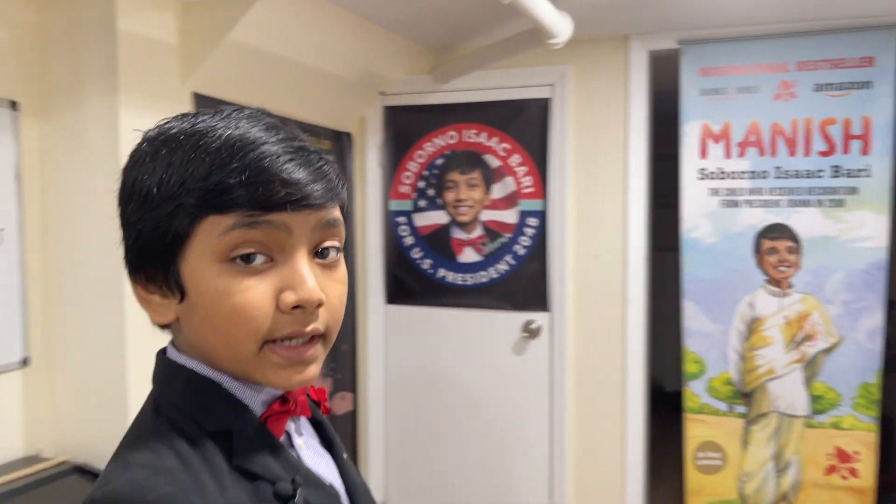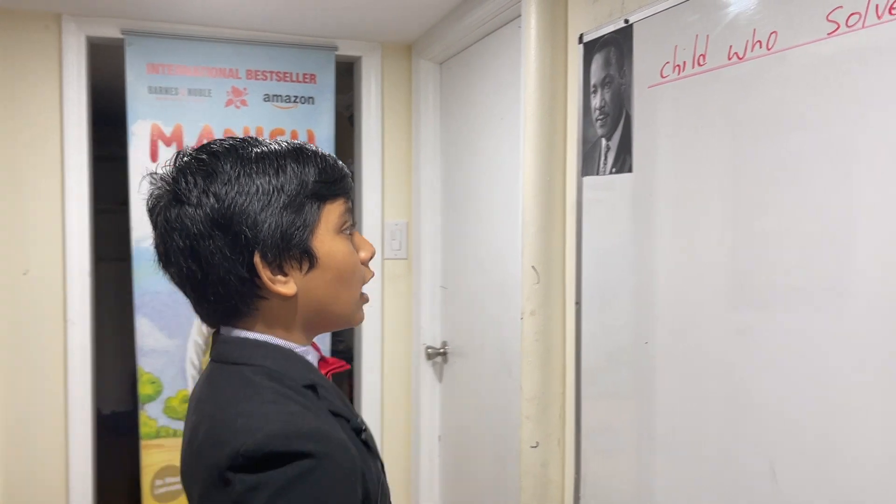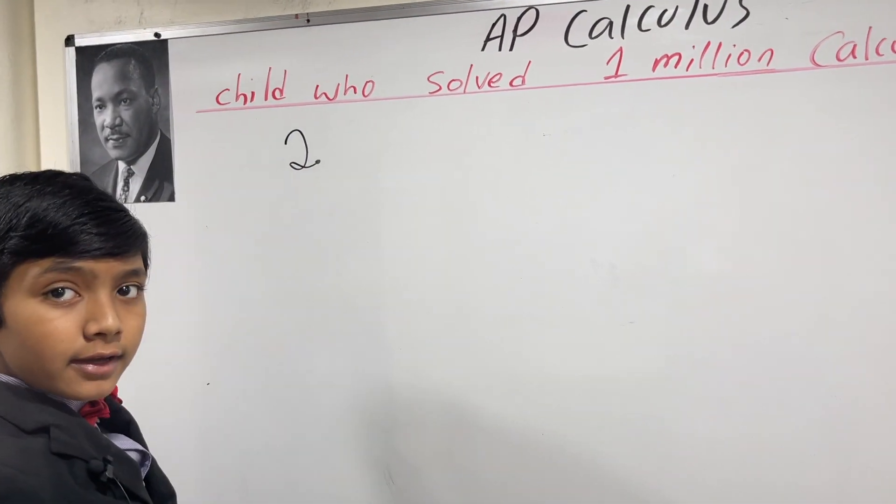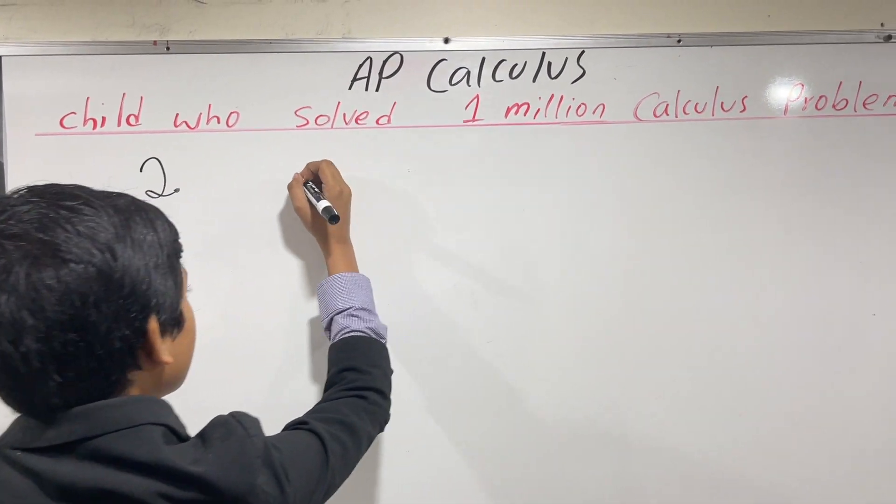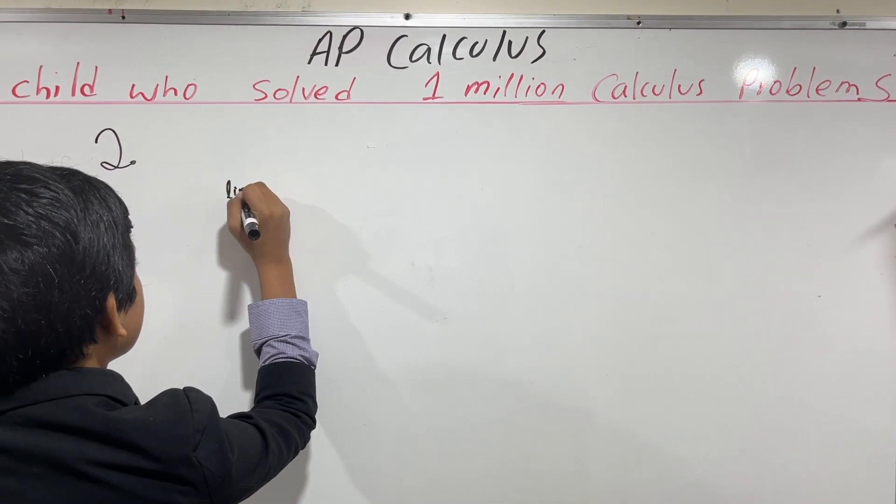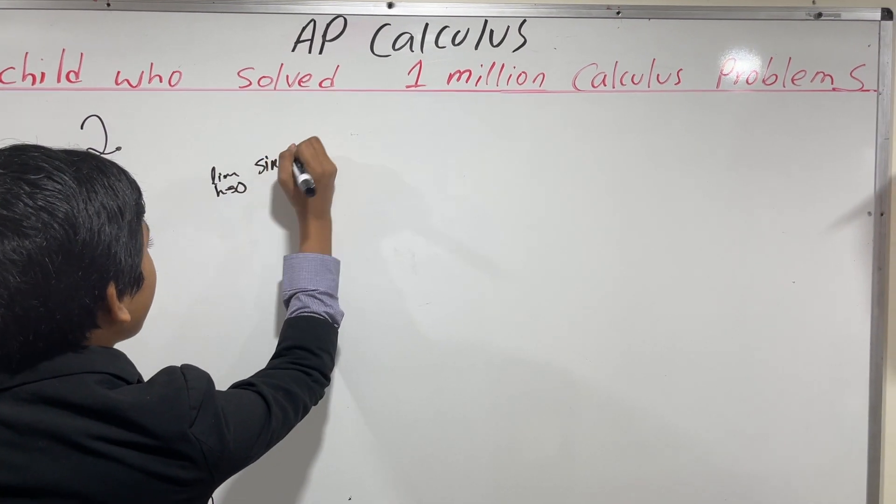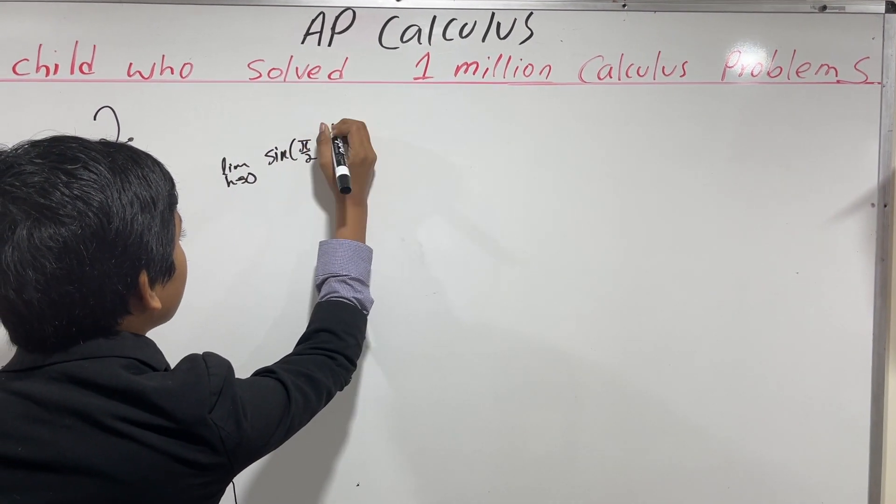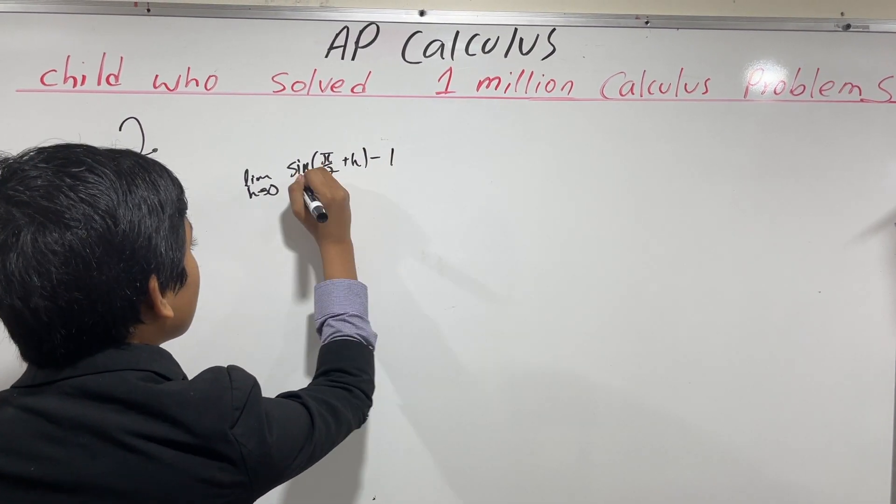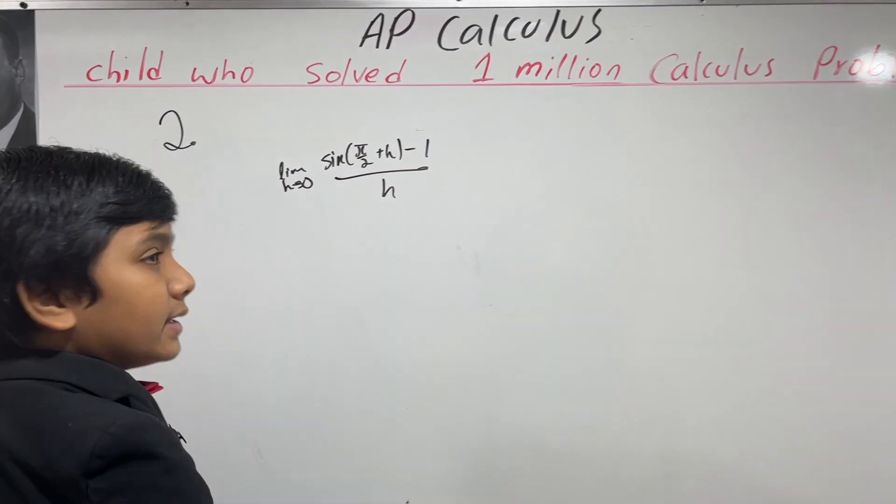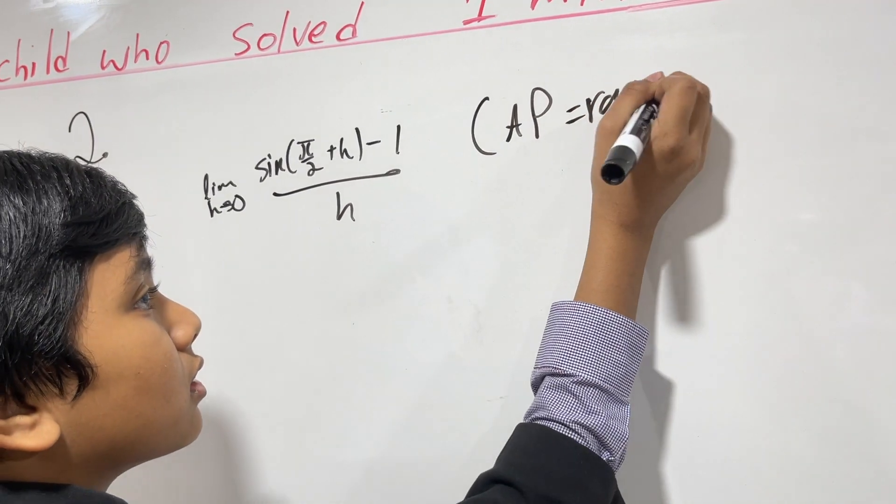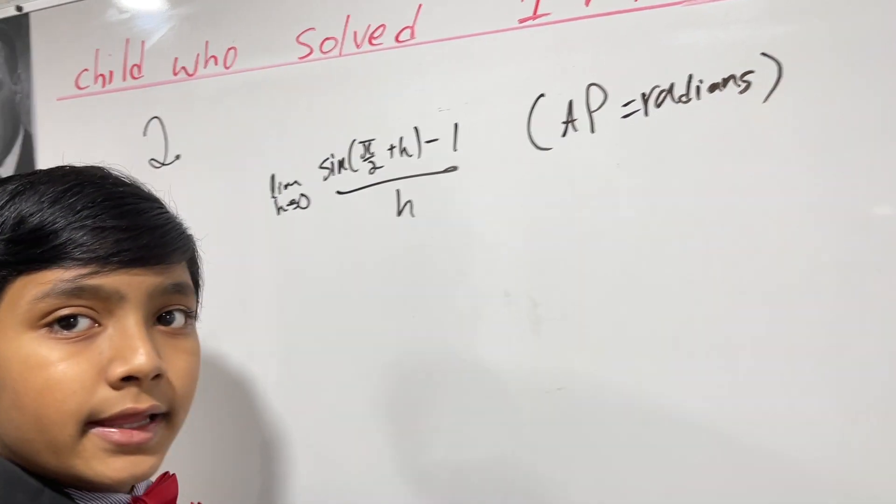This one is kind of tricky because I got it wrong the first time that I tried it. What we're going to do is find the limit as h approaches zero of sine of pi over 2 plus h minus 1 over h. And here's just a reminder that the entire AP exam is in radians, so that's why you see the pi there.